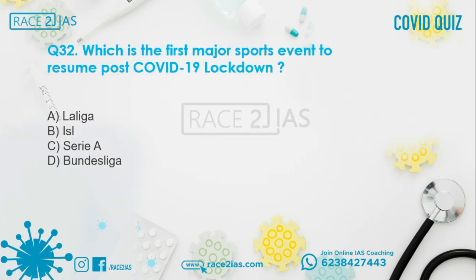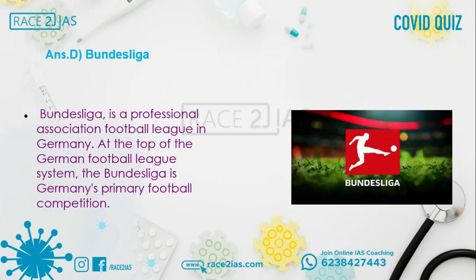Question number 32: Which is the first major sports event to resume post-COVID-19 lockdown? Option A: La Liga. Option B: ISL. Option C: Serie A. Option D: Bundesliga. The right answer is Option D, Bundesliga. Bundesliga is a professional association football league in Germany. At the top of the German football league system, the Bundesliga is Germany's primary football competition.